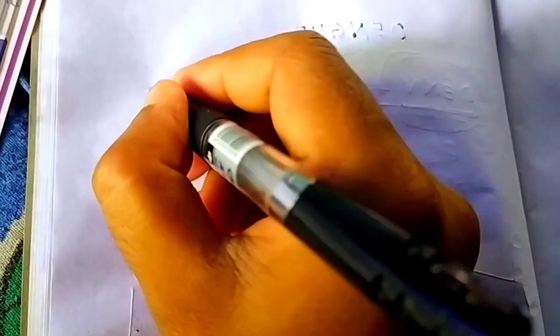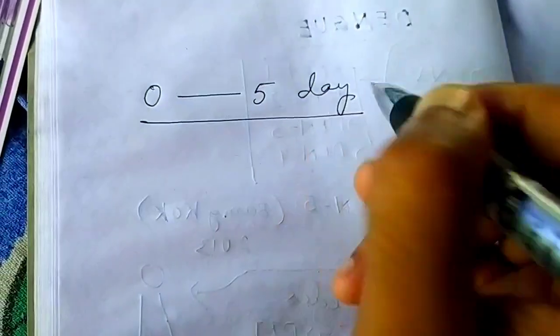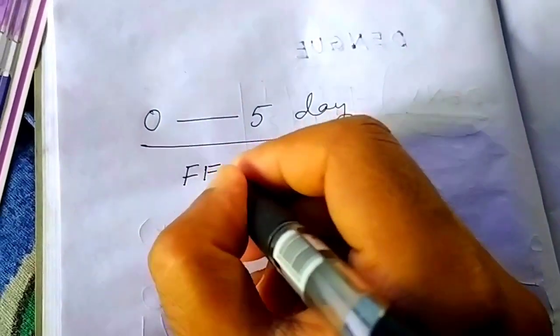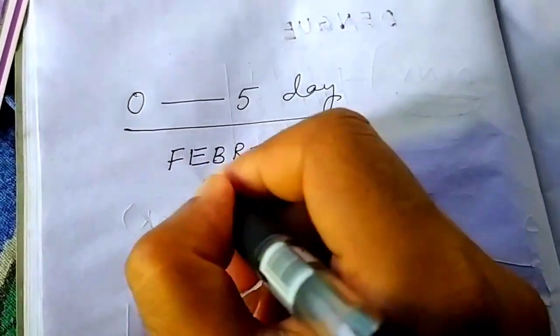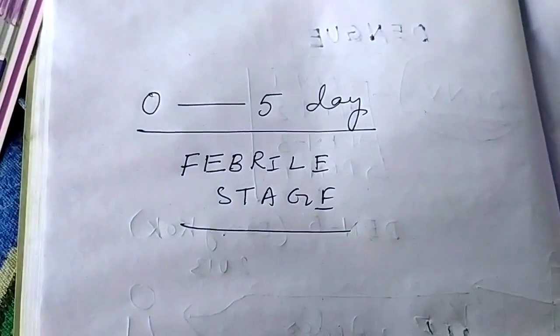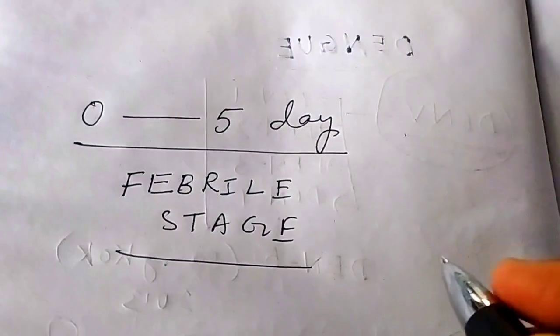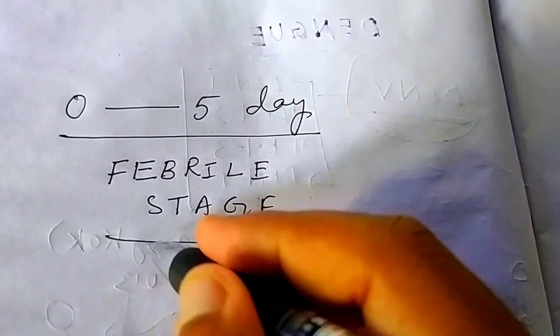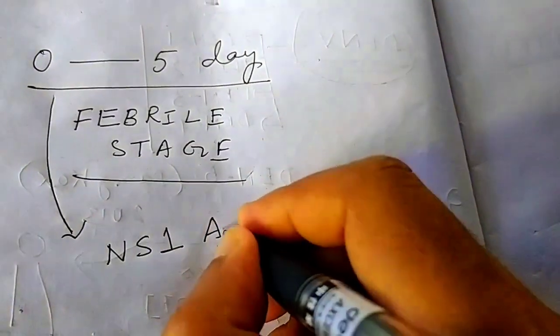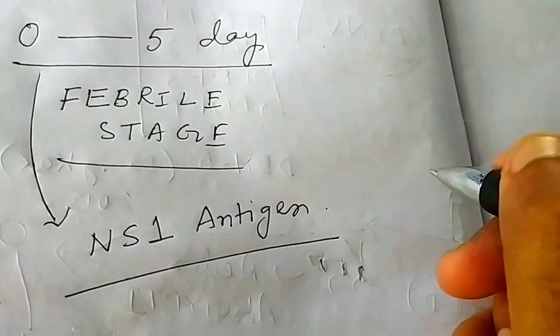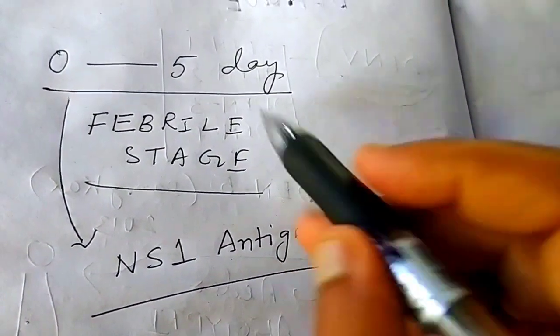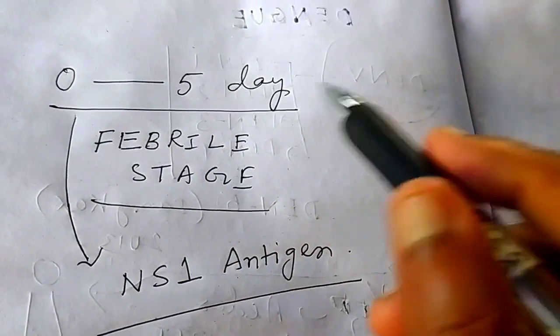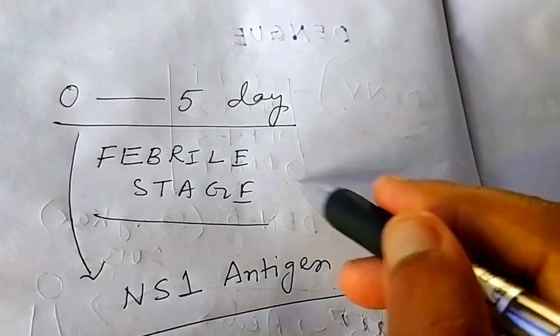Now let me teach you about the first 5 days — 0 to 5 days. These days are known as the febrile stage. In this stage you will get fever. After 5 days it becomes more severe. In this 0 to 5 days you will get the antigen — the NS1 antigen. This is the antigen for the detection of dengue. If you want to find out this antigen, you have to find it within the first week, 0 to 5 days or 7 days, within the febrile stage.